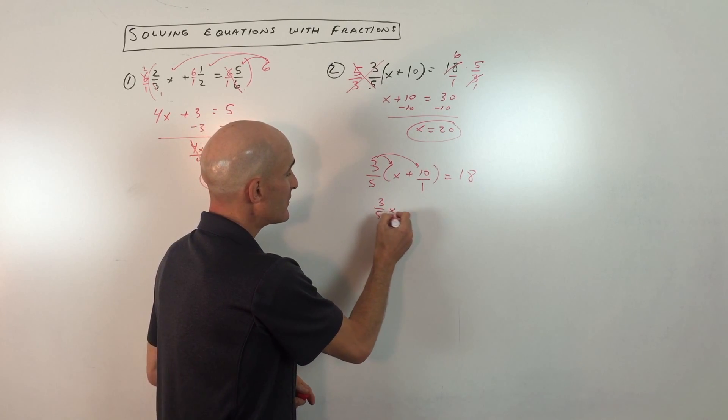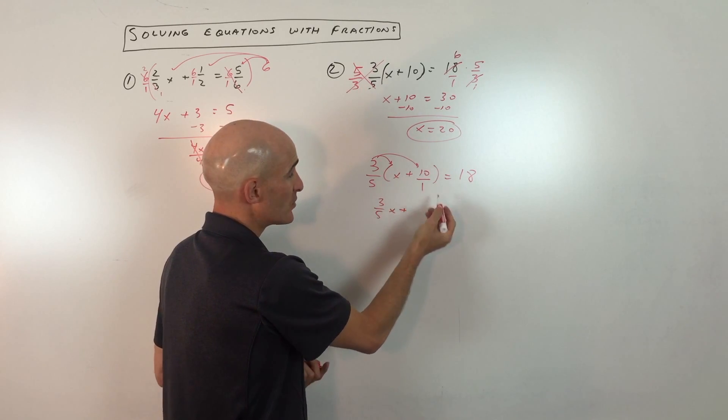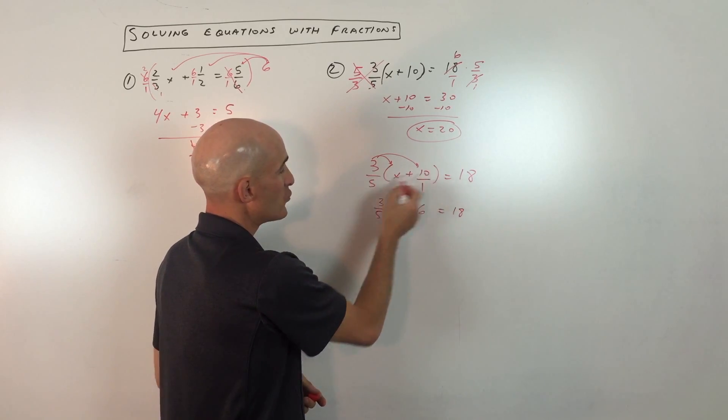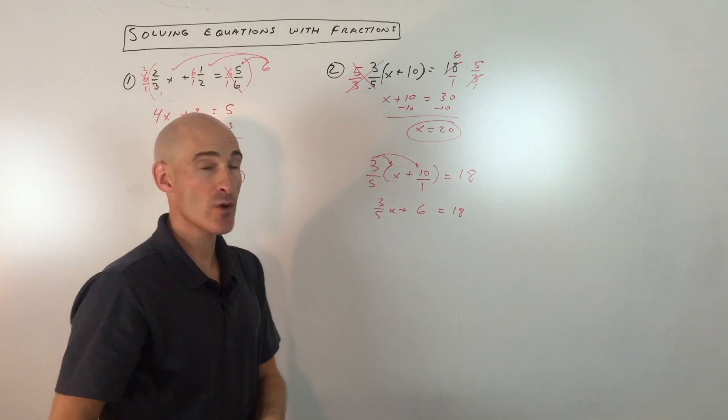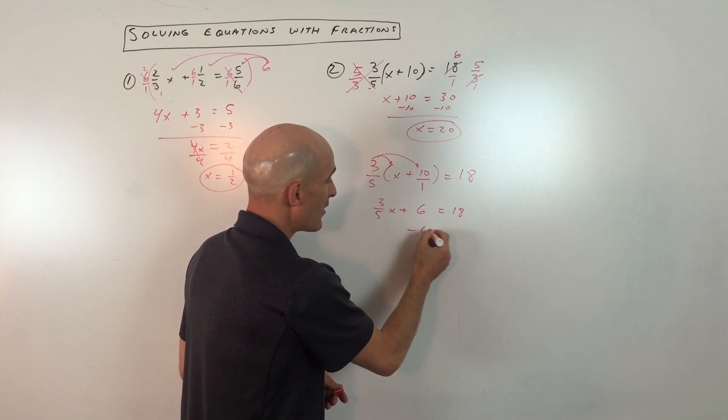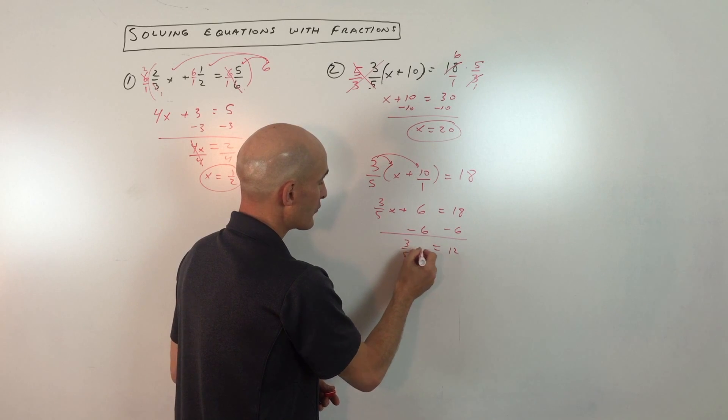So this gives us 3 fifths x. Here we get 30 fifths, which is 6, because 30 divided by 5 is 6, equals 18. So I just multiplied the numerators and the denominators. That's a good way to work with fractions when you're multiplying. And then now we're just going to get the variable by itself by subtracting 6 from both sides. So we get 12, and we have 3 fifths x.